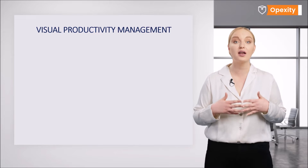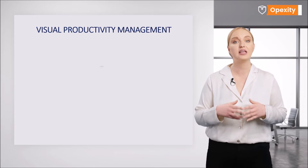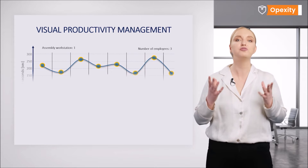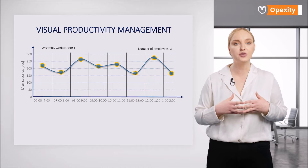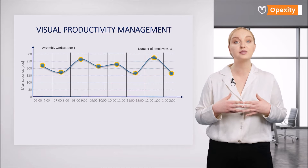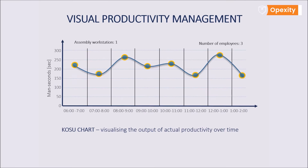Kosu is a productivity management indicator presented in a visual form. The most commonly used form is the productivity chart, where the unit of time is the clock hour. This allows fairly accurate monitoring of productivity and gives the opportunity to increase the response rate if this indicator decreases.